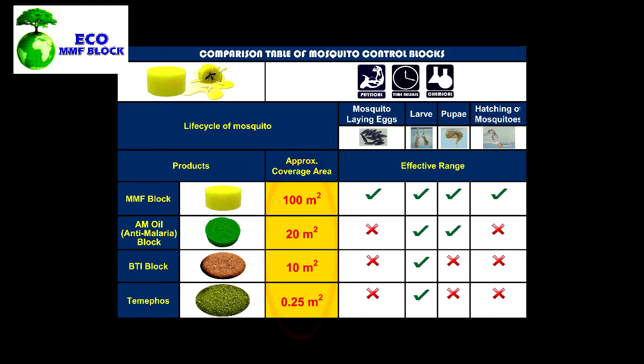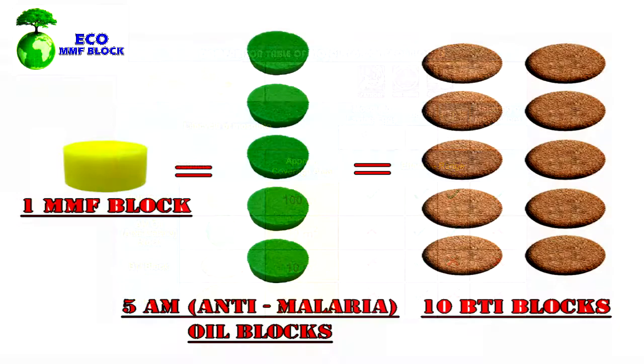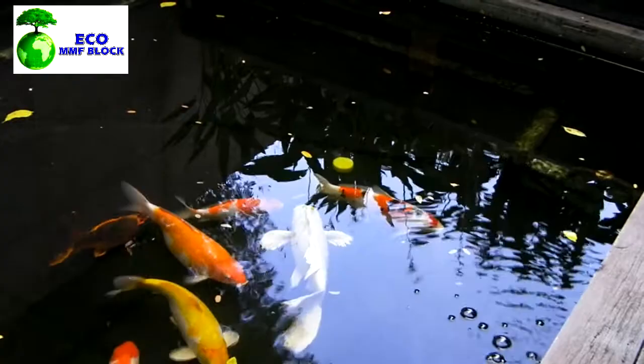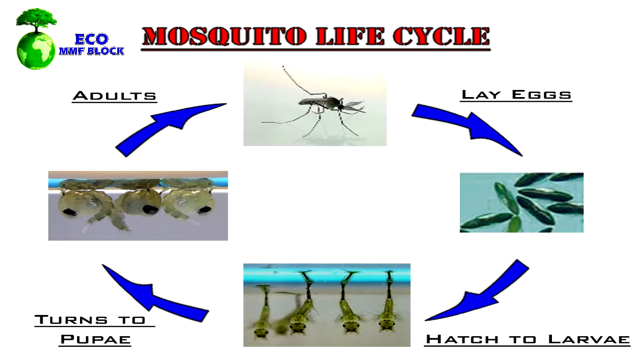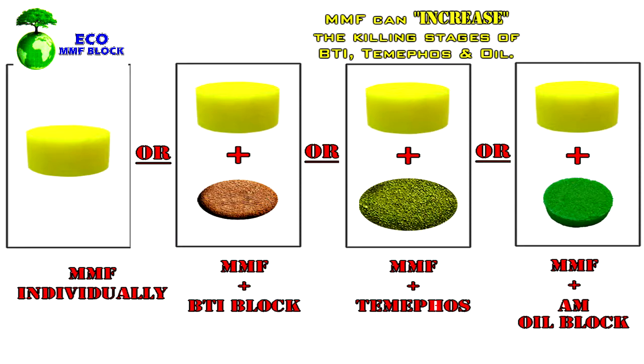In addition, MMF blocks have five times more coverage than oil blocks, and ten times more coverage than BTI blocks. It is also non-toxic to fish and humans when used according to label directions. MMF can control all stages of the mosquito life cycle and can be used singly or together with BTI, temephose, or oil to achieve more effective control.